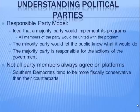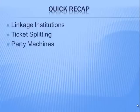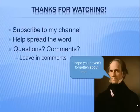Quick recap: linkage institutions — know that definition from chapter one. Ticket splitting is voting for candidates from two different political parties. Party machines are a recap from U.S. history; patronage is giving jobs to political supporters. The New Deal coalition changed the makeup of the Democratic Party, especially for African Americans. Be familiar with the three different types of third parties. That's everything you need to know for this chapter — thanks for watching, please subscribe, share if it was helpful, and leave questions in the comments below.